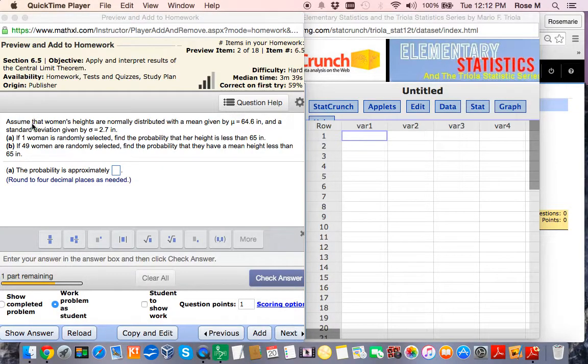It says, Assume that women's heights are normally distributed with a mean given by 64.6 inches and a standard deviation given by 2.7 inches.